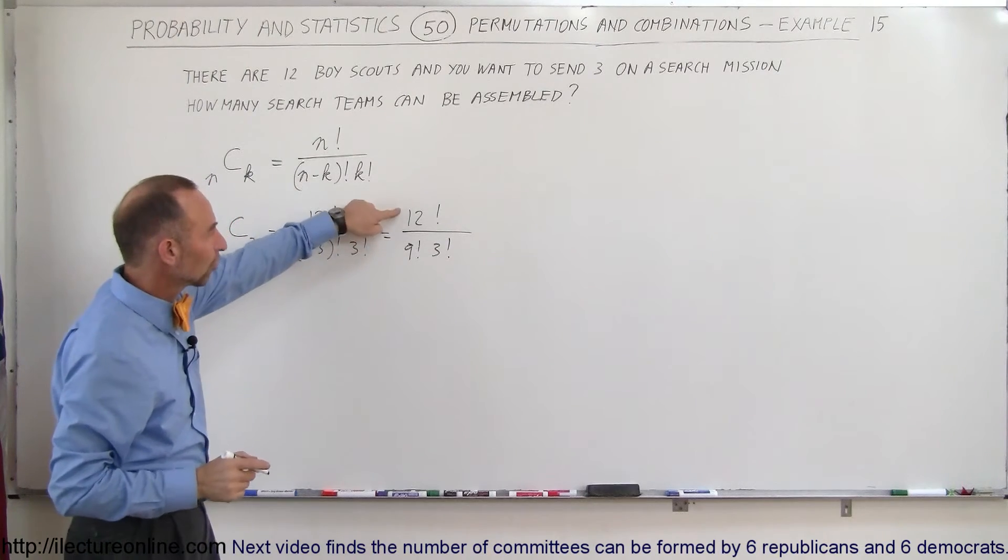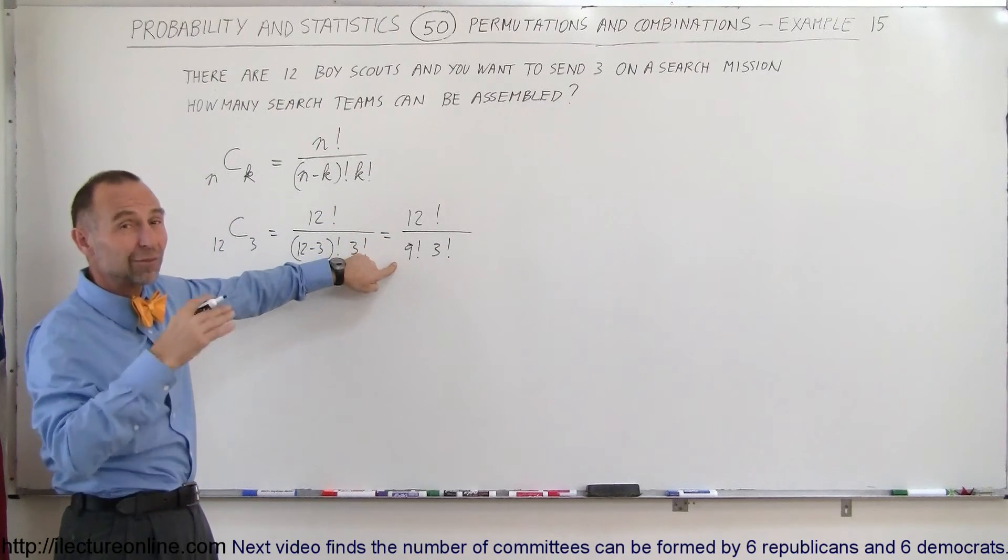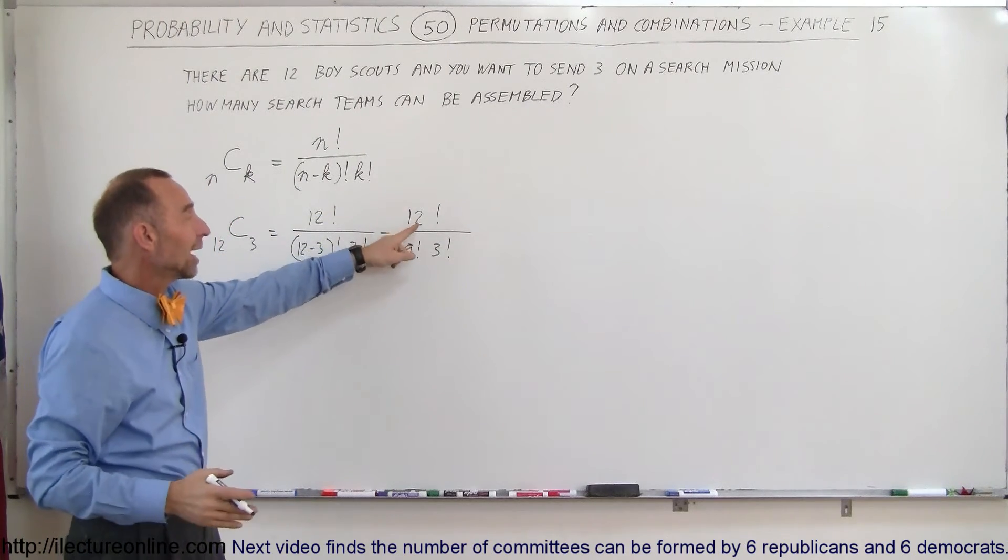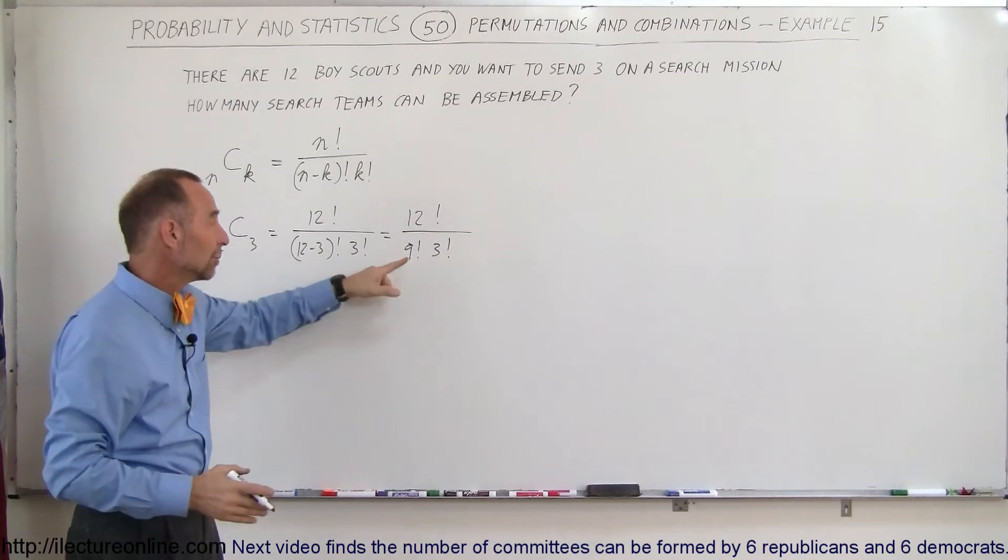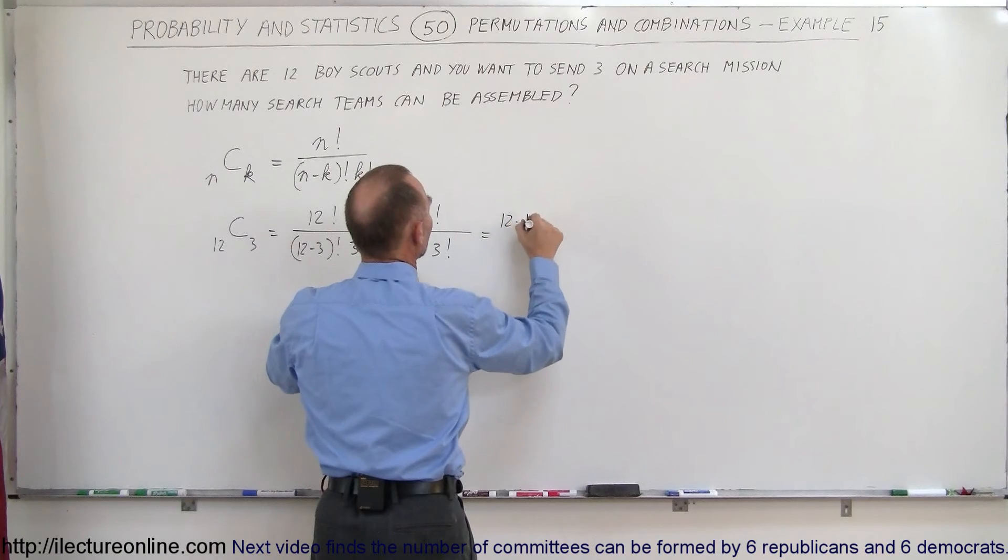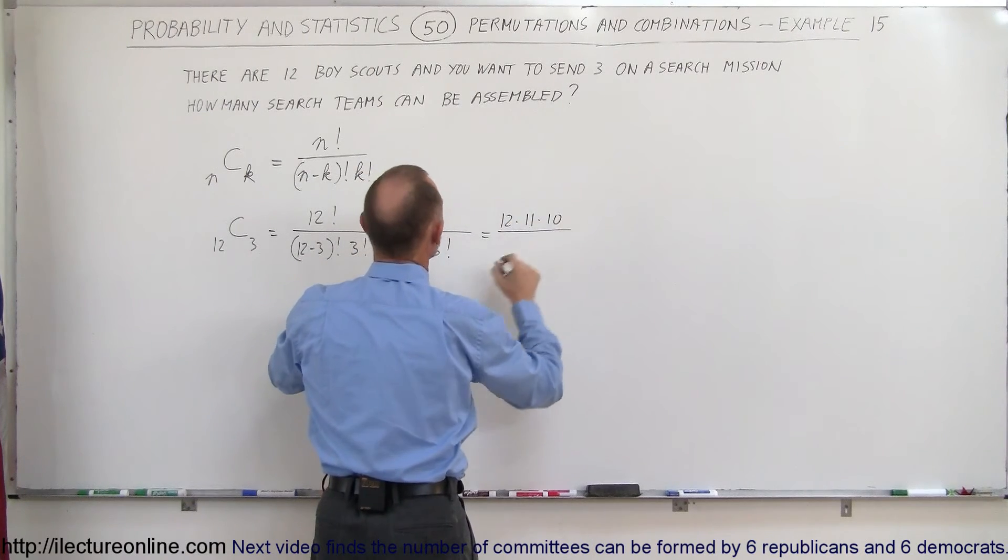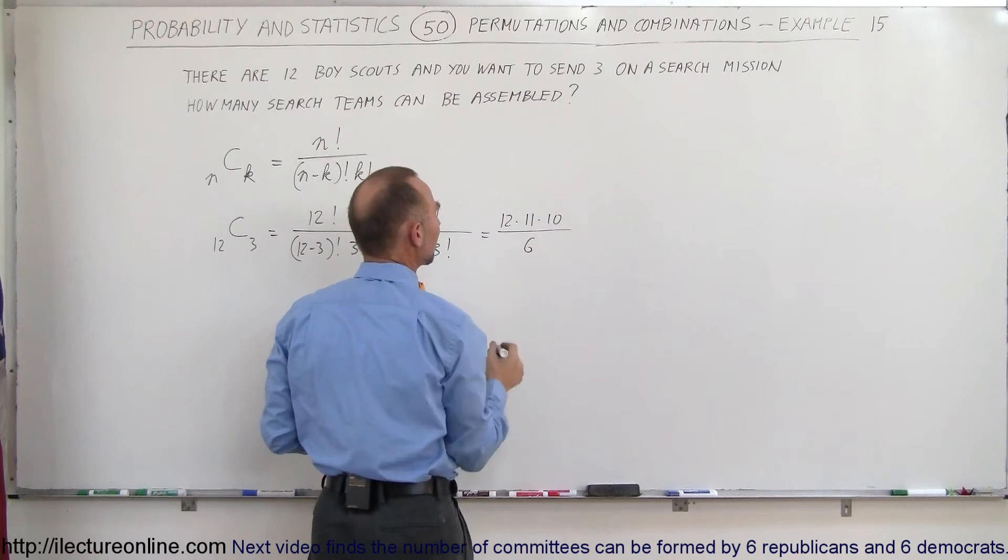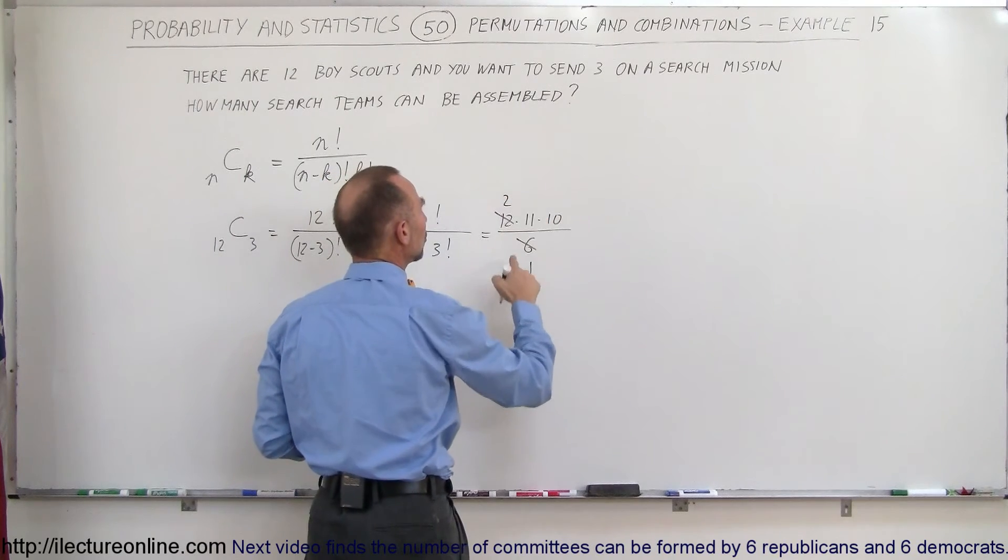And then notice that 12 factorial divided by 9 factorial would be 12 times 11 times 10 because 9 times 8 times 7 on down would be cancelled out by the 9 factorial. So this is equal to 12 times 11 times 10 divided by 3 factorial which is 6. And then the 12 and the 6 cancel out, that's 2.